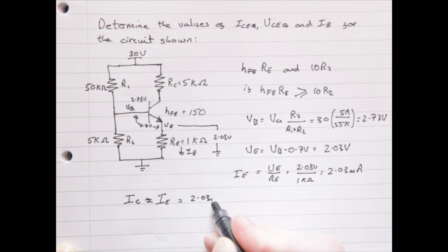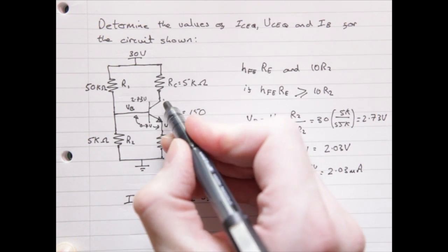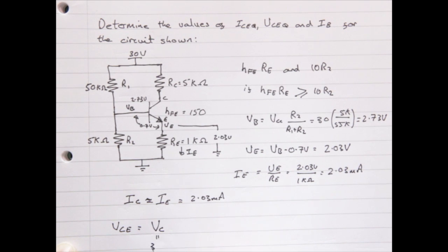Using this current value of 2.03 milliamps, and knowing the resistor values for RC and RE, we can use Ohm's law to calculate the voltage dropped across both the collector and the emitter resistor. By adding these together and subtracting them from the voltage supply of 30 volts, we're able to calculate what the voltage is across the collector emitter.